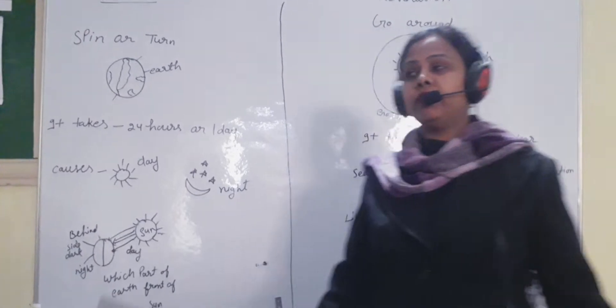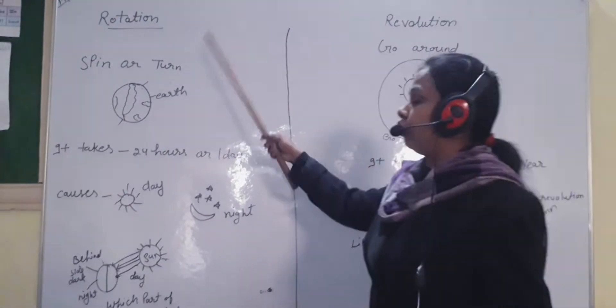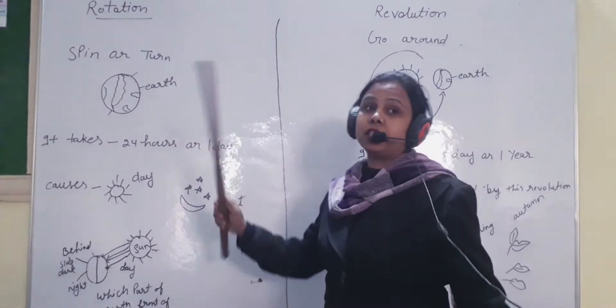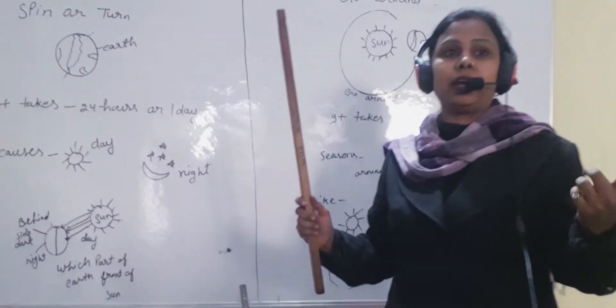We learn about rotation and revolution. What is the difference between rotation and revolution? When earth spins or turns on its center point, when the earth turns around its center point, it is called rotation.